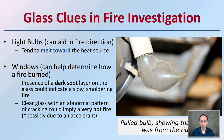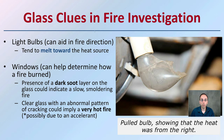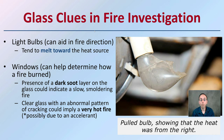If there's glass in a particular situation, this is great for the fire investigation process. As we see here with a light bulb, glass can help indicate the fire's direction as it tends to melt towards the heat source. This indicates the bulb was pulled, showing that the heat came from the right of this image. Windows can also help determine how the fire burned. A really dark, sooty layer on the glass could indicate a slow smoldering fire, while clear glass with an abnormal pattern of cracking could imply a very hot fire, possibly due to the use of an accelerant.